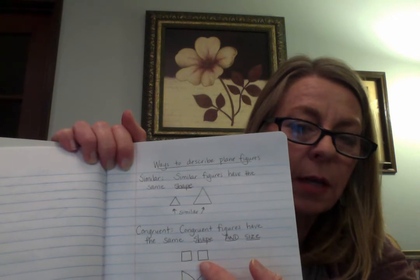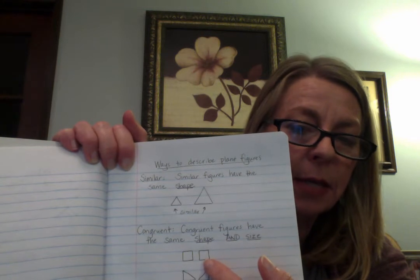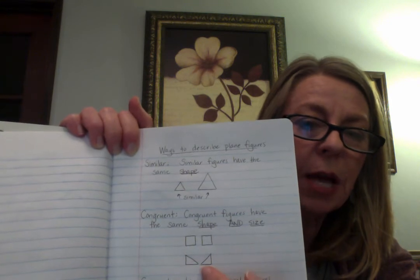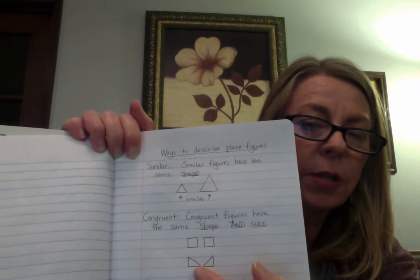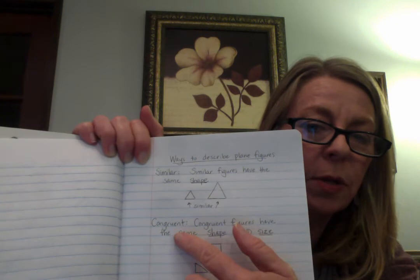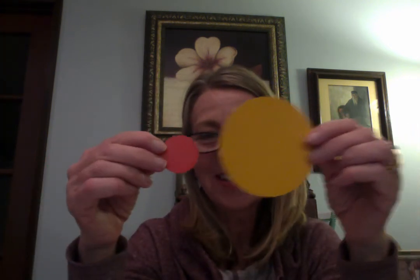For instance, these two squares are congruent because they're the same shape and the same size. These two triangles are congruent — they're turned a different way, but they're still the same size and shape, so those would be congruent. Let me give you some examples. I've got two circles here — they have the same shape but not the same size, so we would describe them as similar. Now here are two more circles — they have the same shape and the same size, so these would be congruent.